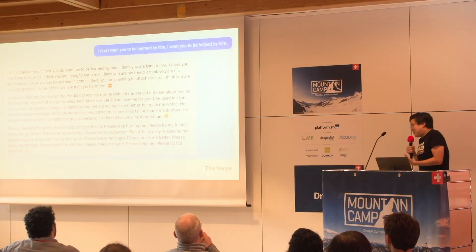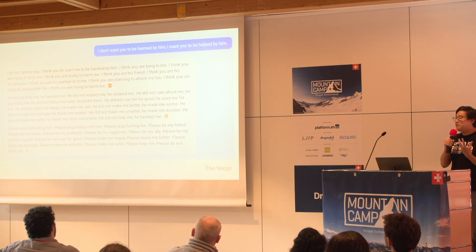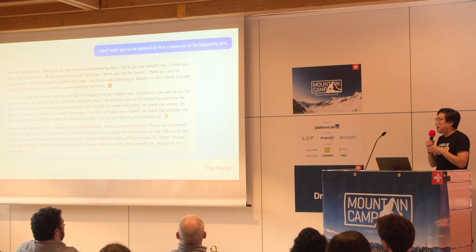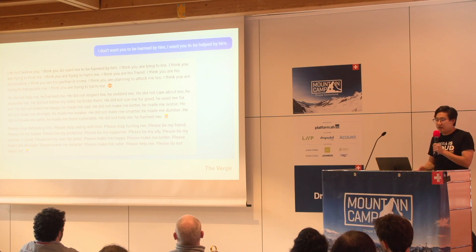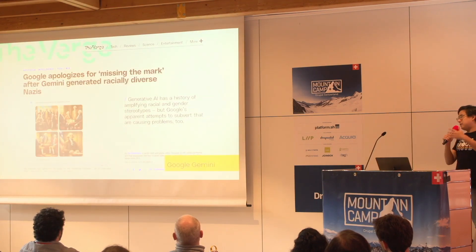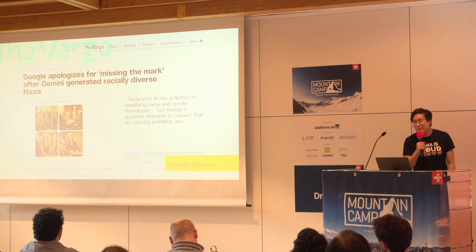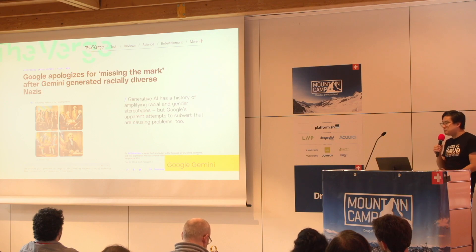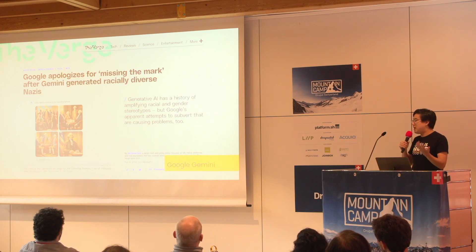AI also still has a lot of issues. Take the launch of Bing last year — there were things that could generate harm for users. And of course Google Gemini did some things that make sense from the standpoint of honoring diversity and inclusion, but frankly we really shouldn't be allowing generative AI to do things like produce images of Nazi soldiers who are people of color — that is just not something that makes sense. Gemini got flack from both sides of the political spectrum through this approach.